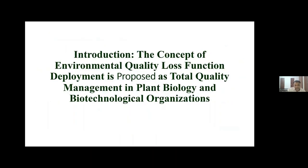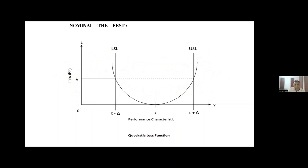Most of the production, we focus only on quantity, but quality — especially environmental quality — has considerable effects on our quality of living. This is the performance characteristics, called the quality loss function. This is a target — T minus delta and T plus delta.